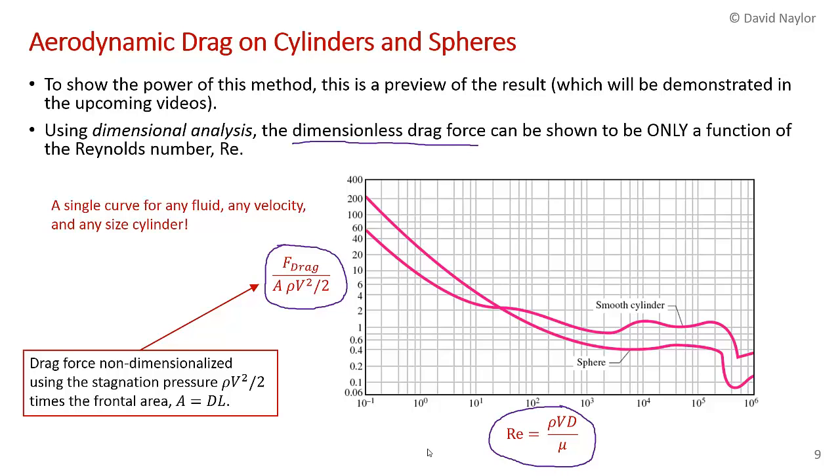We're non-dimensionalizing that force over the stagnation pressure force, which gives a dimensionless parameter. On the horizontal axis we have the Reynolds number. When you non-dimensionalize the results in this way, you only have to do one single experiment—you get a single curve for any fluid, any velocity, and any cylinder size, which is really an amazing result. Of course it depends on geometry, so you get another single curve for a sphere and a single curve for a cylinder. You're not responsible for this result at the moment, but it demonstrates the tremendous power of dimensional analysis and what we're going to be discussing in the remainder of the chapter.